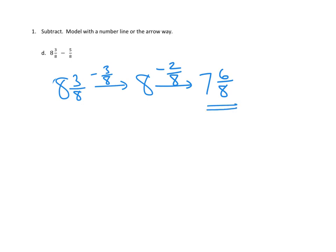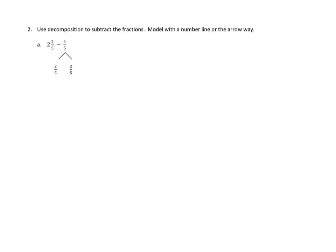So what we've done here is that we've used our arrow method to break down our subtraction into two steps. One step gets us from a mixed number to a simple whole number, and then the second step gets us to our answer, 7 and 6/8. That's how we would use the arrow method to subtract a fraction from a mixed number. Let's take a look at another problem in number 2, and this time we'll use a number line. Problem number 2 asks us: Use decomposition to subtract the fractions. Model with a number line or the arrow way. This time we're going to do it with a number line. So I'm going to go ahead and draw my number line over here. I know I'm going to start off at 2 and 2/5.